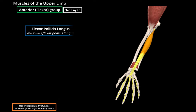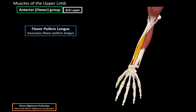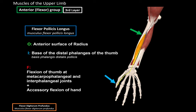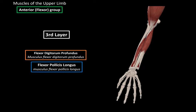Next we have the flexor pollicis longus. It originates from the anterior surface of the radius and inserts at the base of the distal phalanx of the thumb, or the first finger. When its muscle fibers contract, they flex the thumb at the metacarpophalangeal and interphalangeal joints, as well as help with accessory flexion of the hand. That was the third layer.